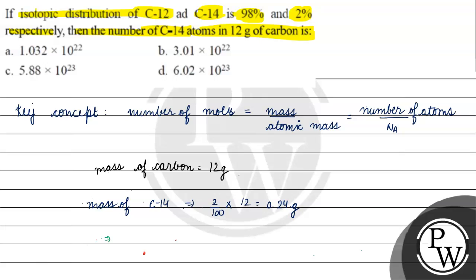We have mass. I know mass by atomic mass. For C-14, 14 grams per mole into Avogadro's number will give us number of C-14 atoms in 12 grams of carbon.